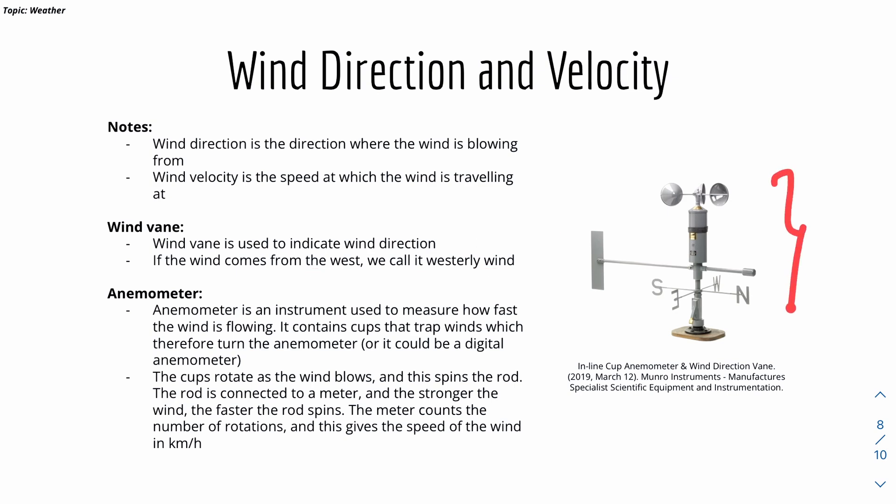Here's a diagram of cup anemometer and the wind direction vane. Here's some notes on anemometer. Anemometer is an instrument that is used to measure how fast the wind is blowing.